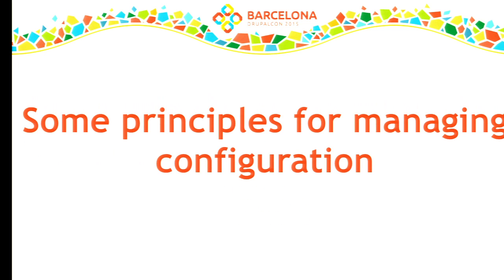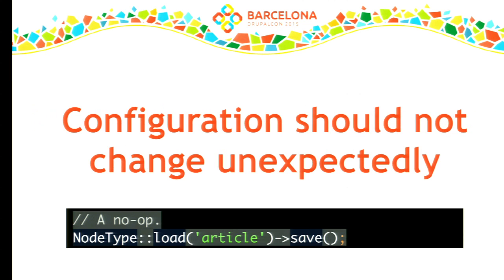Here are some principles we've discovered for managing configuration sanely in Drupal 8. Firstly, configuration shouldn't change unexpectedly. If you load a node type and immediately save it, and that actually changes the underlying configuration, then something has gone wrong. Put another way, if all the runtime dependencies of the configuration are satisfied, then regardless of any other code being available to the system — like installing yet another module — the configuration shouldn't change. A module shouldn't, on installation, go and change every other piece of configuration, because you're breaking the contract that the configuration is what the user has configured, not what the module has configured.